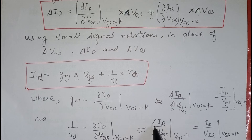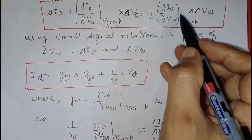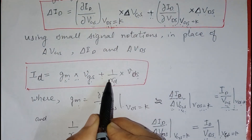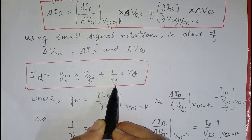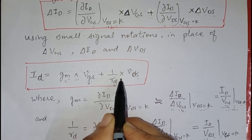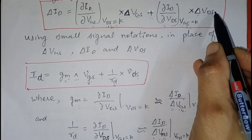The second term is actually equal to the change in ID upon change in VDS, which equals ID/VDS. This is actually the reciprocal of a resistance, so this term can be replaced by 1/rd, where rd is the output resistance or drain resistance of the FET. The delta VDS is replaced by the small signal notation vds.